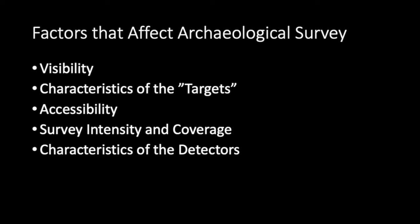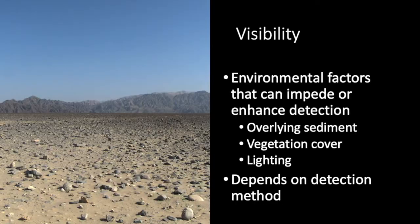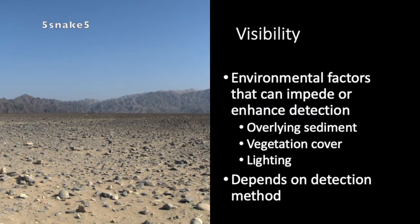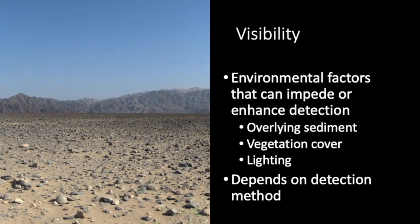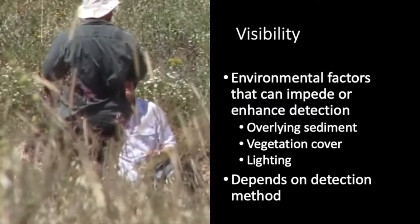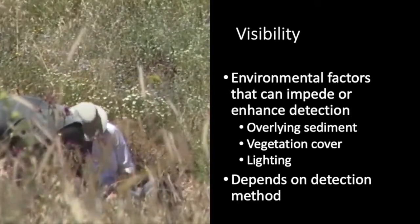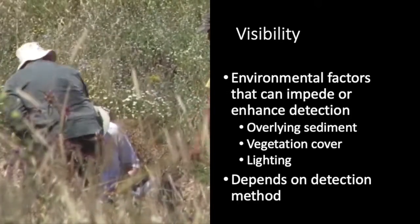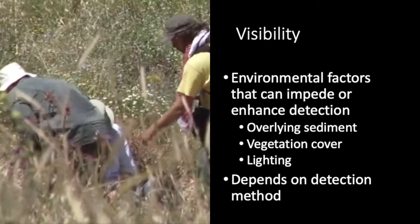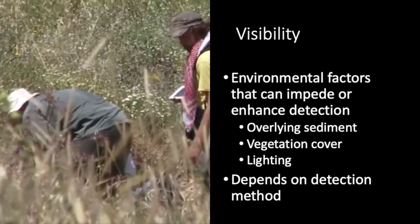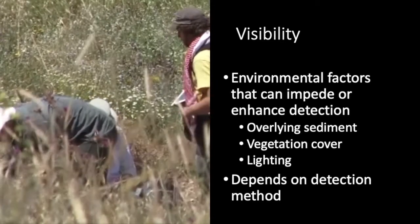When designing any type of survey, it's important to take into account a number of factors that can affect the outcome. Visibility has to do with environmental characteristics that can make it easier or harder to detect archaeological artifacts and other traces of past human activity. For visual detection, for example in field walking, the most important of these are overlying sediment, vegetation cover, and lighting conditions, which can vary depending on the time of day as well as the season.